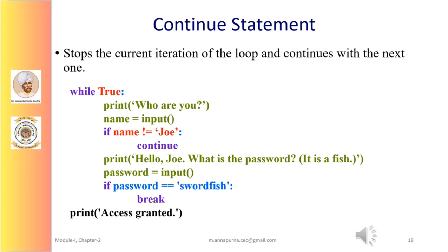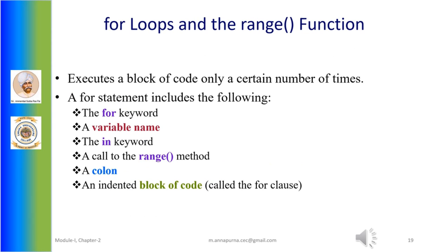If the compiler encounters a continue statement, then the rest of the statements in the loop are skipped and control is unconditionally transferred to the loop continuation portion of the nearest enclosing loop. In the example, if the user enters any name besides Joe, the continue statement causes the program execution to jump back to the start of the loop. Otherwise, the execution continues to the end of the while loop, where it then jumps back to the start of the loop.